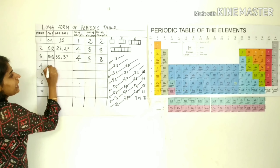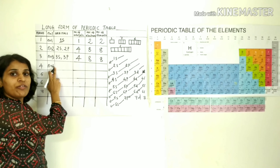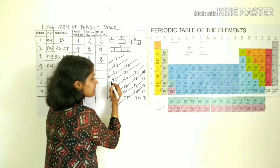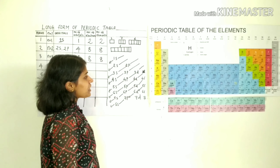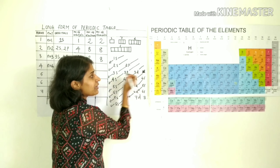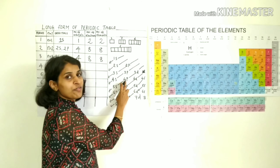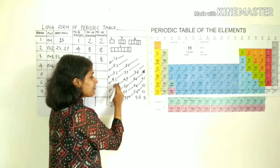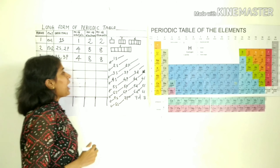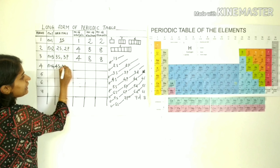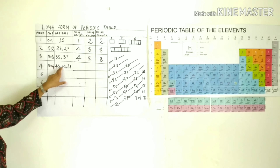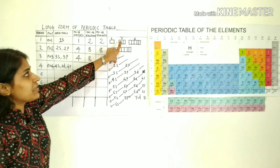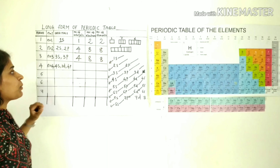The fourth period has n equal to 4, corresponding to the filling of the fourth energy level. The corresponding orbitals are 4s, 4p, 4d, and 4f. By Aufbau principle, the filling order is 4s, then 3d, then 4p. So the orbitals filled are: 1 s-orbital, 5 d-orbitals, and 3 p-orbitals — giving 1 + 5 + 3 = 9 orbitals.